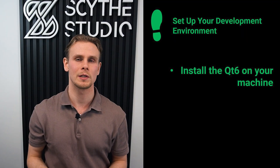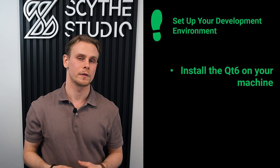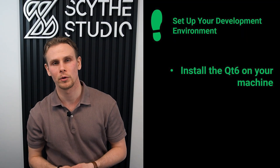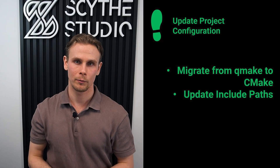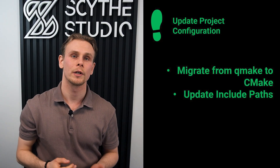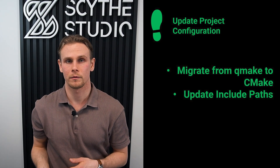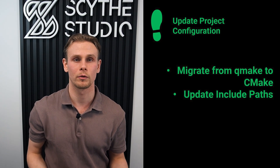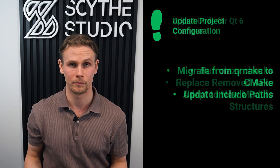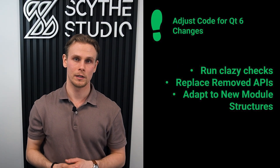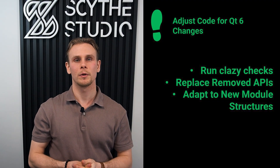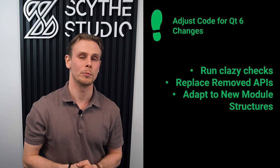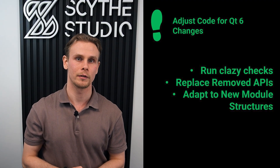The next step for the porting process is to set up your development environment. Install Qt 6 on your machine. If your project uses QMake, convert the QMake project file to CMake — this involves creating CMakeLists files and configuring them to find and use Qt 6 modules. Change your include paths from Qt 5 to Qt 6 modules; for example, replace include Qt5Module with include Qt6Module. Run Clazy checks: set all the Clazy checks dedicated to Qt 6 porting and run those on your project. Then identify and replace any Qt 5 APIs that have been removed in Qt 6 with their new equivalents.